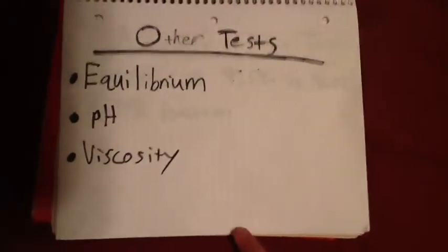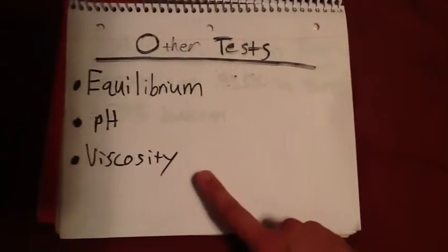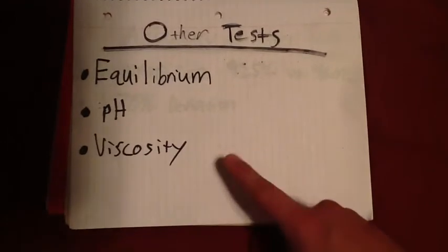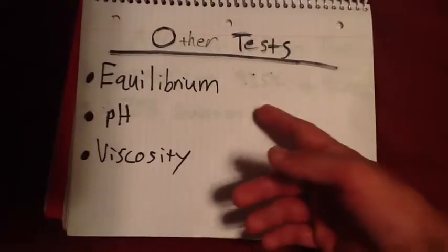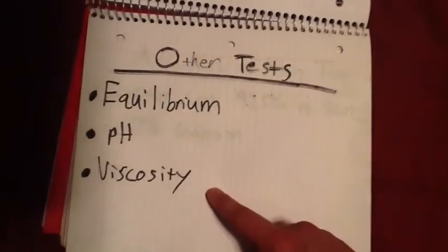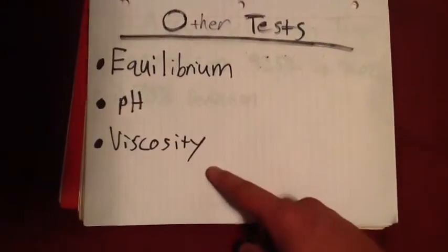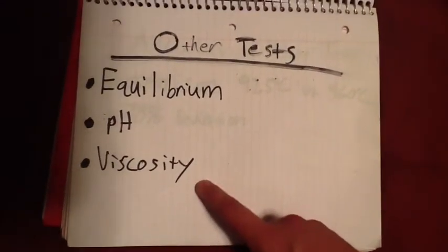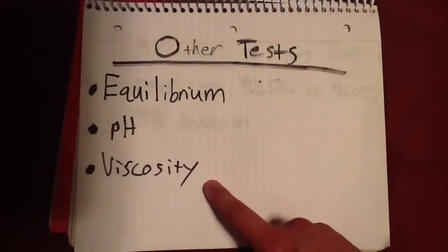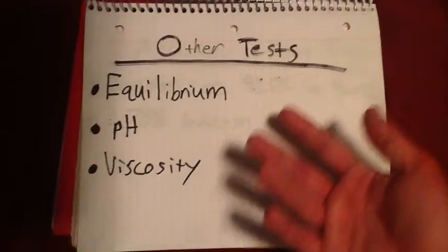We could also test in some sense the viscosity of alum in solution compared to that of water or other solutions. This is one we haven't really used that much in class and is kind of a wild card, but could be a viable source to determine if alum is the type of alum that we wanted to create.